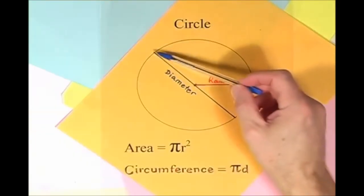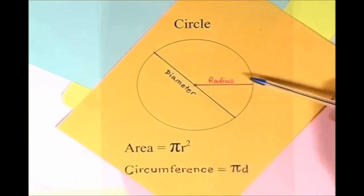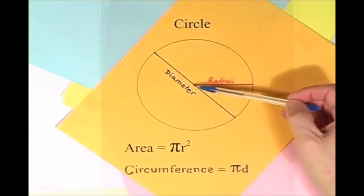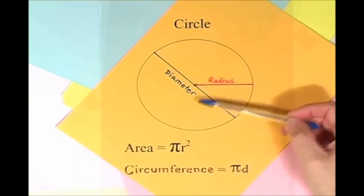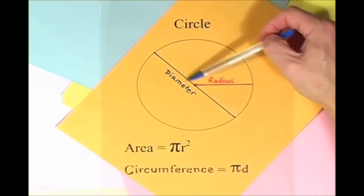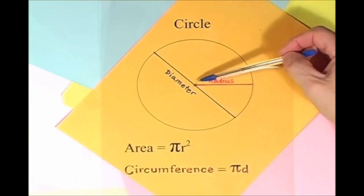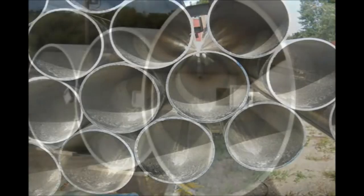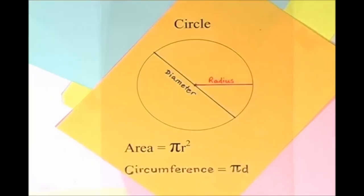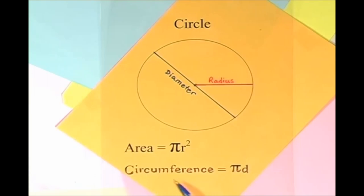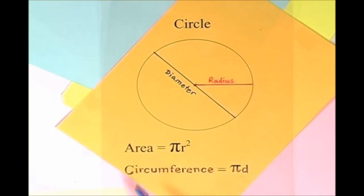Here is a circle, it knows how to get around. It has a radius from center to rim. And its diameter's a line that goes from side to side while passing through the center, now isn't that simple. Pi r squared sounds like area to me, when I need a circumference, I'll just use pi d.